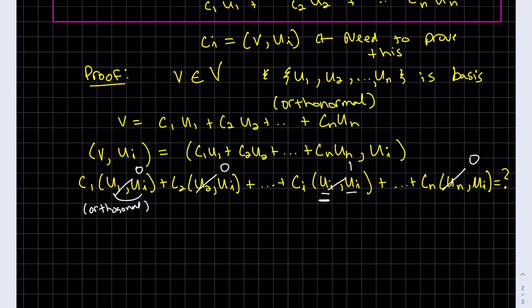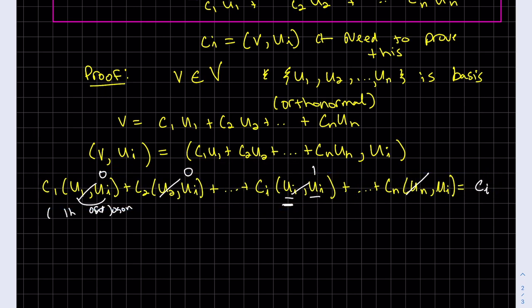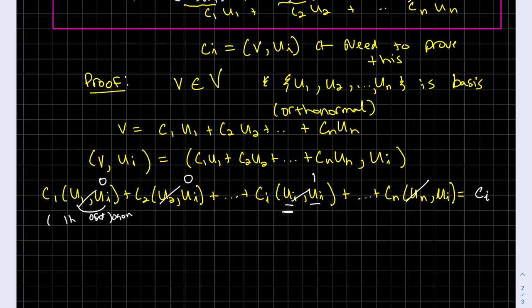So all of this equals ci, because ci times one. So what did I get? I proved it. This whole thing, the left side v·ui, equals the right side ci. Therefore, I proved it.